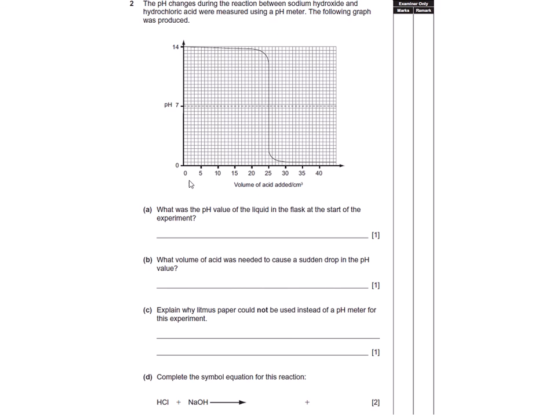pH value on the flask at the start of the experiment: well at the start there's no acid added, so 14. I think almost all of you got that one. The volume for the sudden drop, well the sudden drop is obviously here and then if you project that on down, 25 cm³.